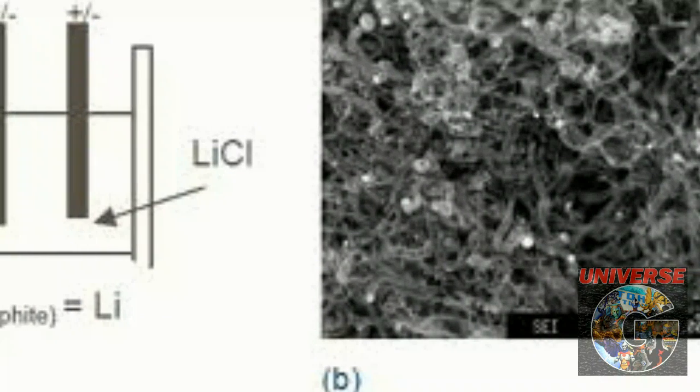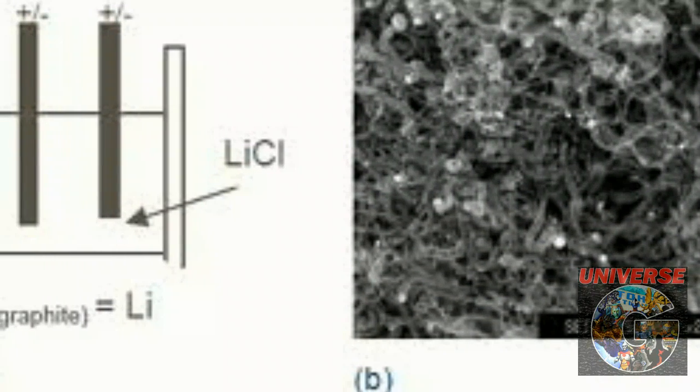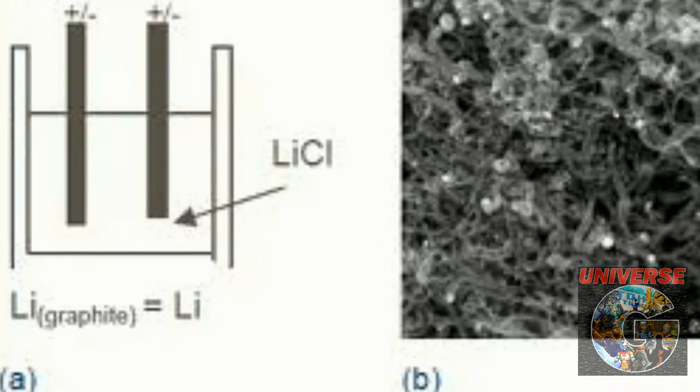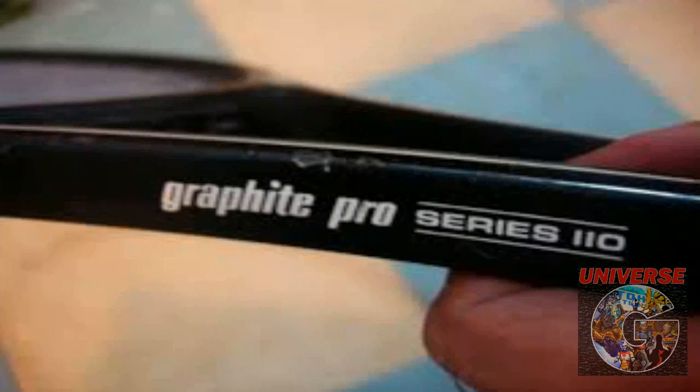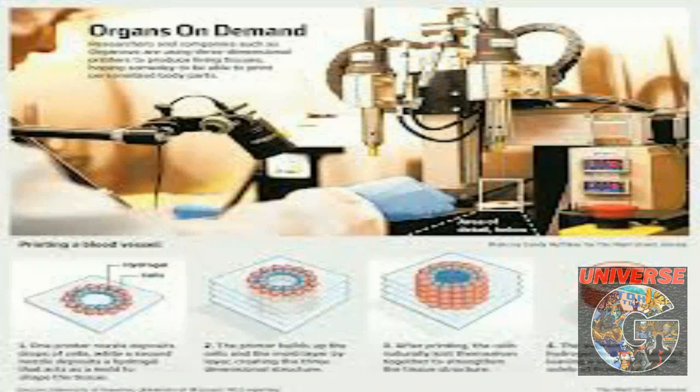These single layers of carbon atoms provide the foundation for other important materials. Graphite or pencil lead is formed when you stack graphene. Carbon nanotubes, another emerging material, are made of rolled graphene. These are used in bikes, tennis rackets, and even living tissue engineering.